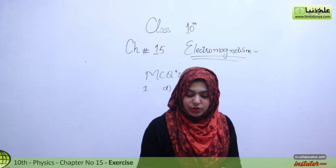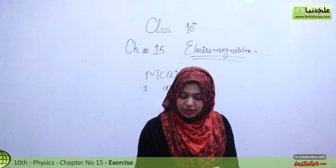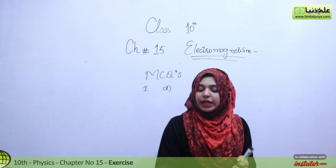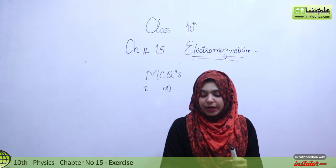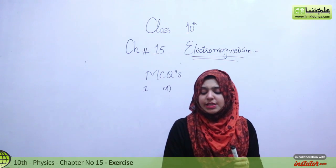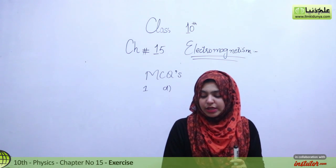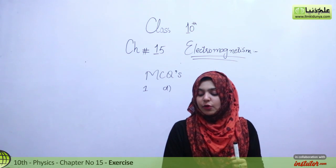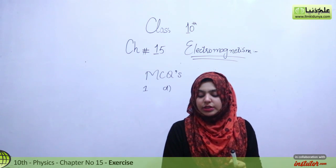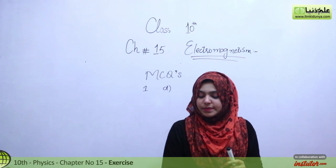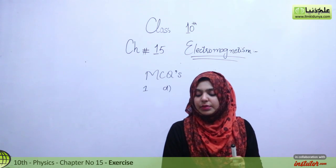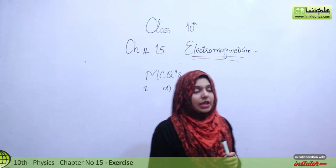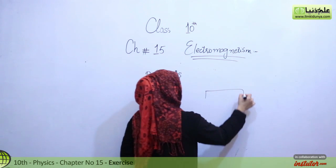Number 2 is: what is the direction of the magnetic field line inside the bar magnet? Number A is from north to south, number B is from south to north, number C from side to side, and number D there are no magnetic field lines. If we look at the bar magnet with south and north poles: